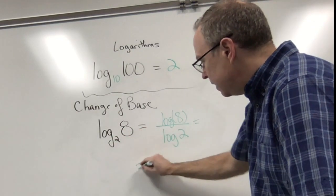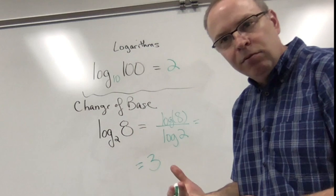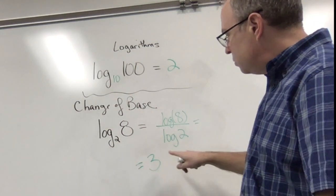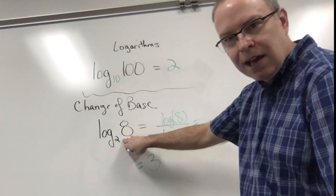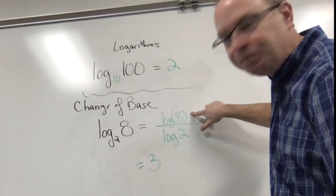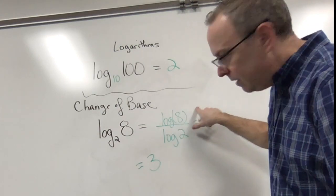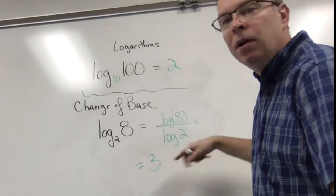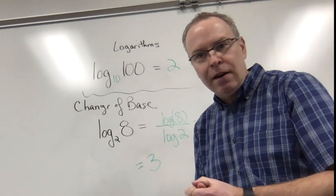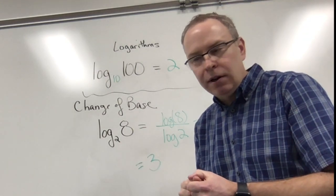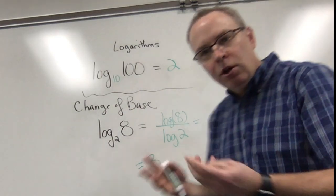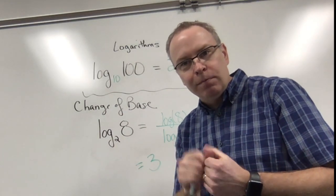So I want you to practice that in your own calculator and make sure you understand how to type something like this in the calculator. You have to do the change of base formula. You have to change it to log 8 divided by log 2, and then you can actually get your calculator to come out with the answer here. Alright, so let me know if you have any questions, see me in class, and good luck with logarithms.